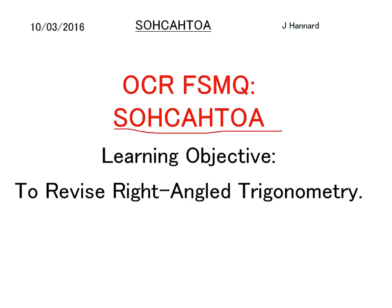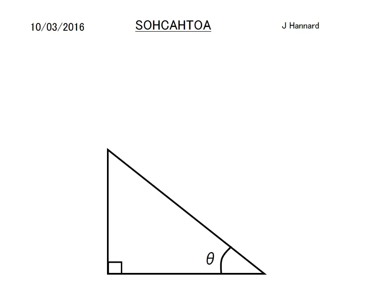SOH is sine opposite hypotenuse, CAH is cosine adjacent hypotenuse, and TOA is tan opposite adjacent. Let's just talk about a right-angled triangle.